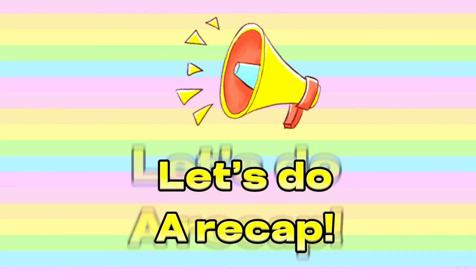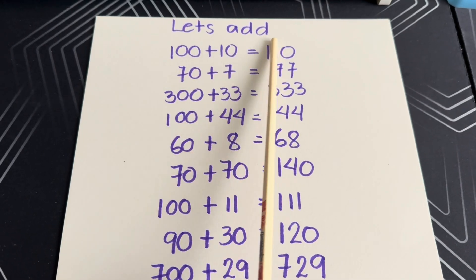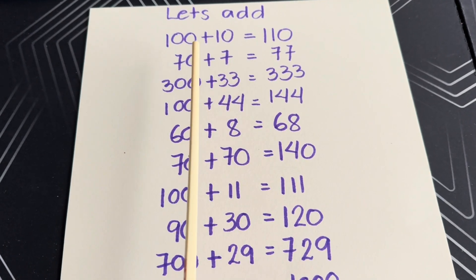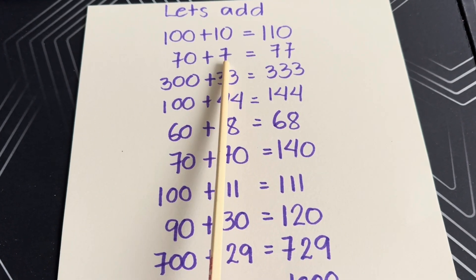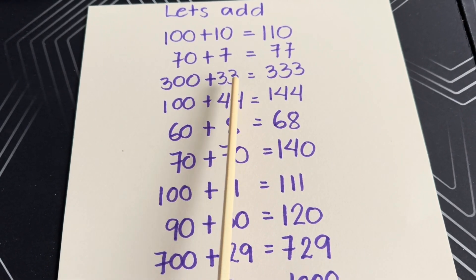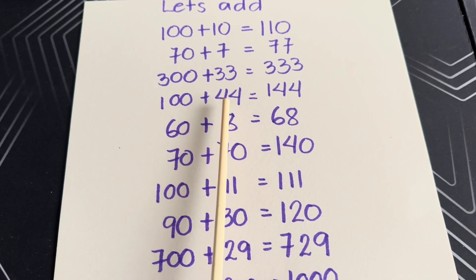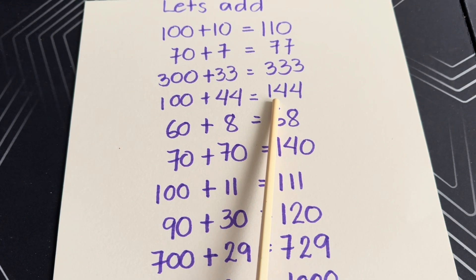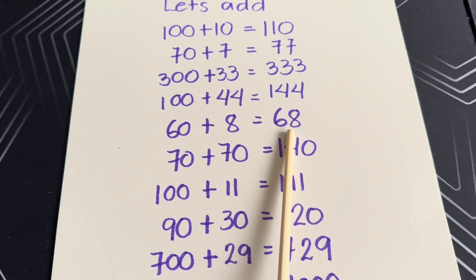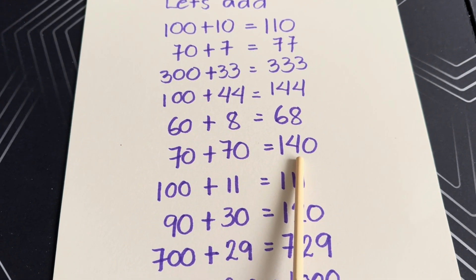Come join me and let's do a recap. Let's add. 70 plus 70 is equals to 140.